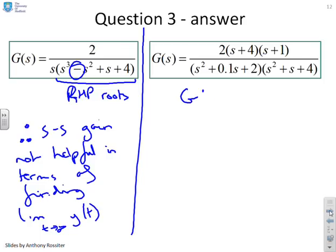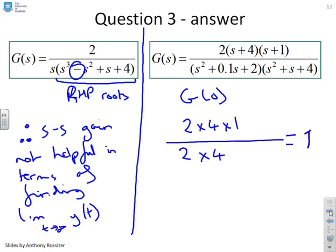And this last one over here, there's no particular tricks. You can see two quadratic factors, positive coefficients. Therefore, it's stable. So G(0) can be written as 2 times 4 times 1 divided by 2 times 4, which is going to give you just one.